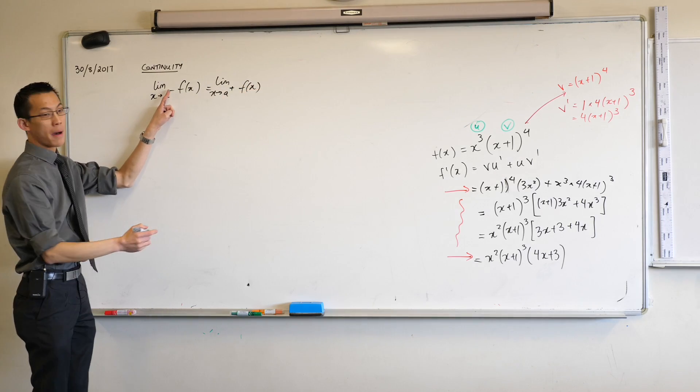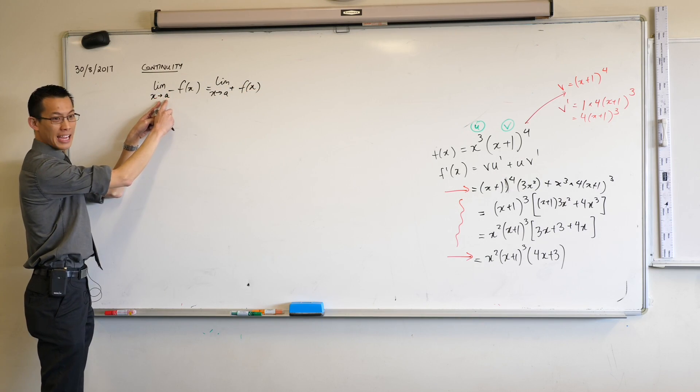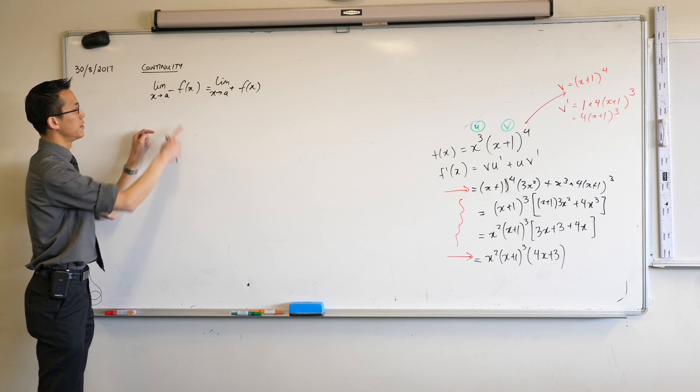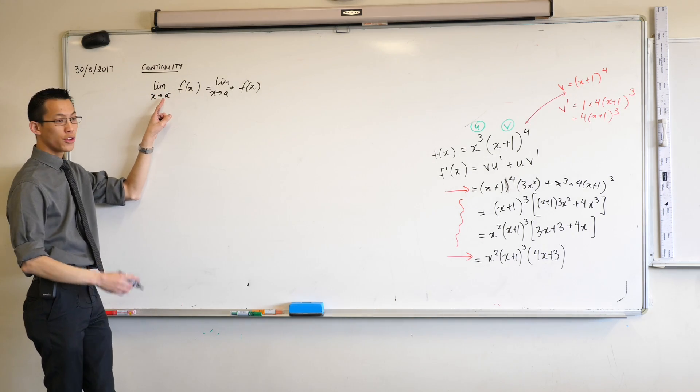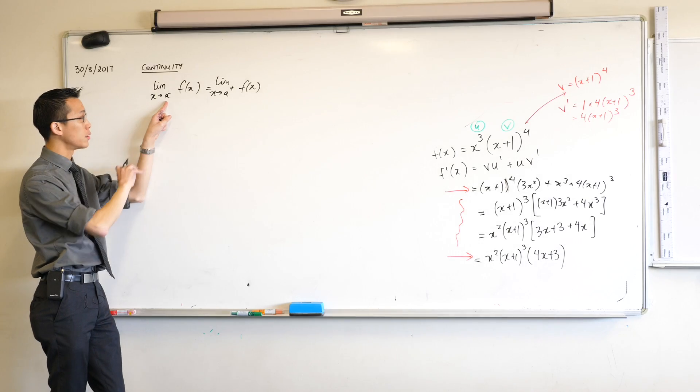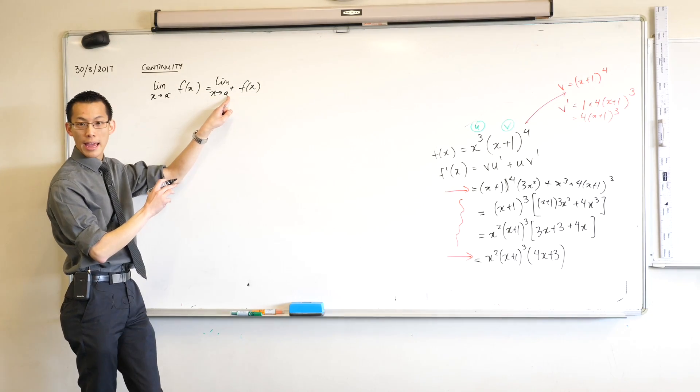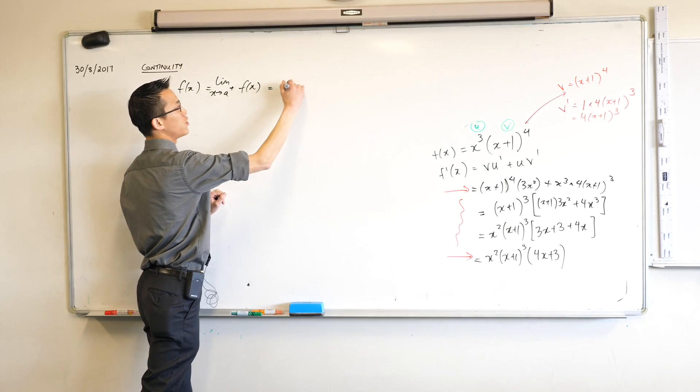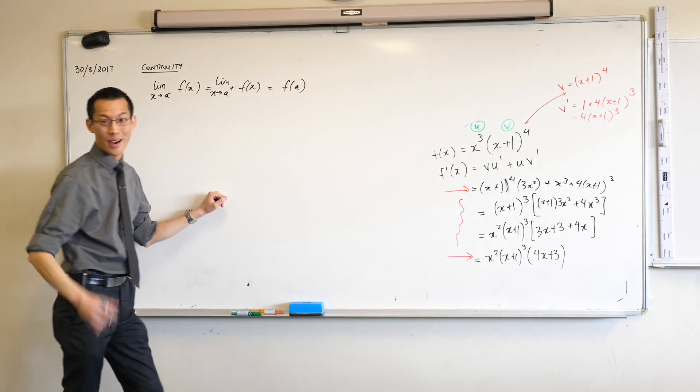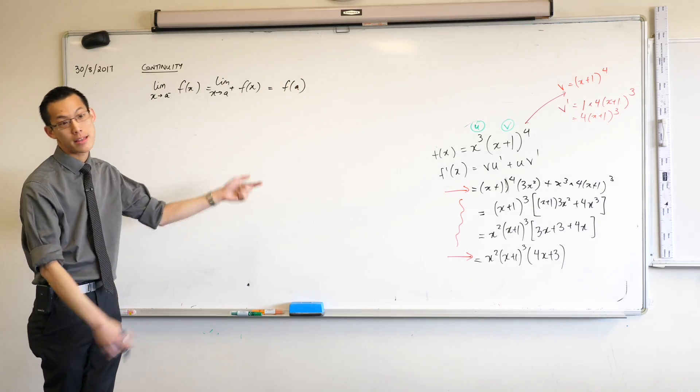So please note by the way that minus sign, it attaches to the a. I haven't drawn it very well. I'll draw it a bit lower. There we go. So it means go toward that number a from the left, go toward that number a from the right. There's one more thing that you need, which is for the actual spot at a to exist and be the same, okay?